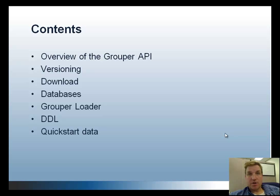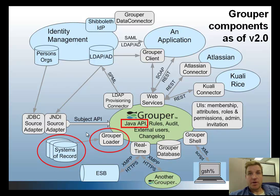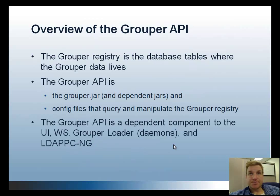In the Grouper architecture diagram, the API is right in the middle. It's used by the web services, the user interfaces, the Grouper Loader, provisioning, etc. And then the Grouper Loader talks to external systems of record via SQL or JNDI, LDAP, to sync groups inside of Grouper.